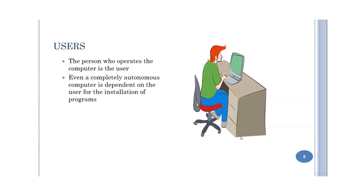The next part of a computer system is the user — the person who is operating the computer. Every computer system, even if it is completely autonomous, is dependent on the user. The user is the most important part of the computer because without the user the computer cannot perform any task; it is still dependent on the user for the installation of different programs.